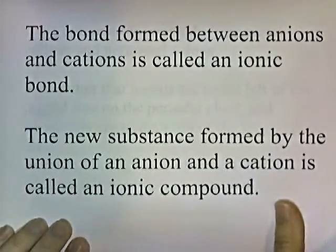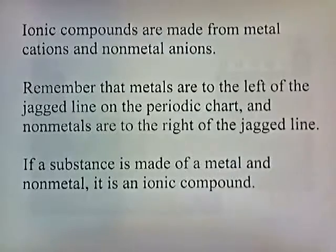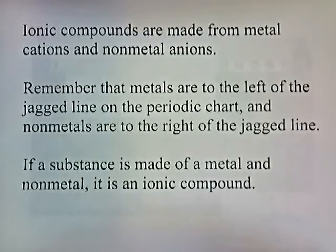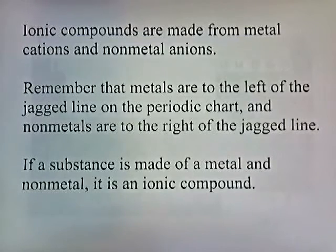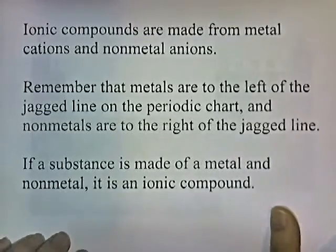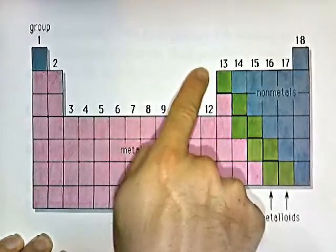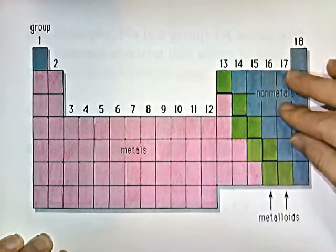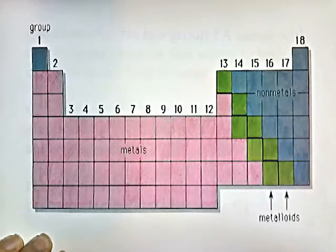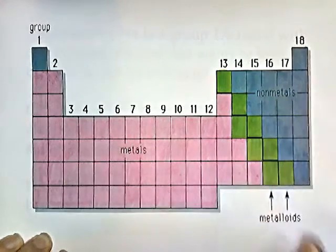The new substance formed by the union of an anion and a cation is called an ionic compound. Ionic compounds are made from metal cations and non-metal anions. Metals are on the left side of the periodic chart and non-metals are on the right side, to the right of the jagged line. So a compound made of a metal and a non-metal is an ionic compound.